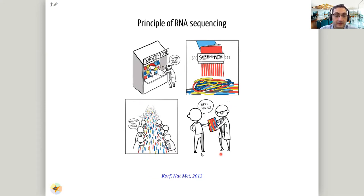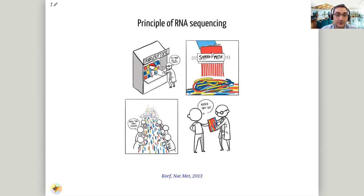Moving away from the biology and going directly to RNA sequencing: what is the main principle? This is one of my favorite analogies. You have the scientist asking to do a transcript of everything — all the different cells in their samples. What actually happens is you have the transcriptome and you basically shred it. Your mRNA is fragmented into literally hundreds of millions or even billions of different small pieces. What you get from the sequencing machine is this whole mess of colored strips.